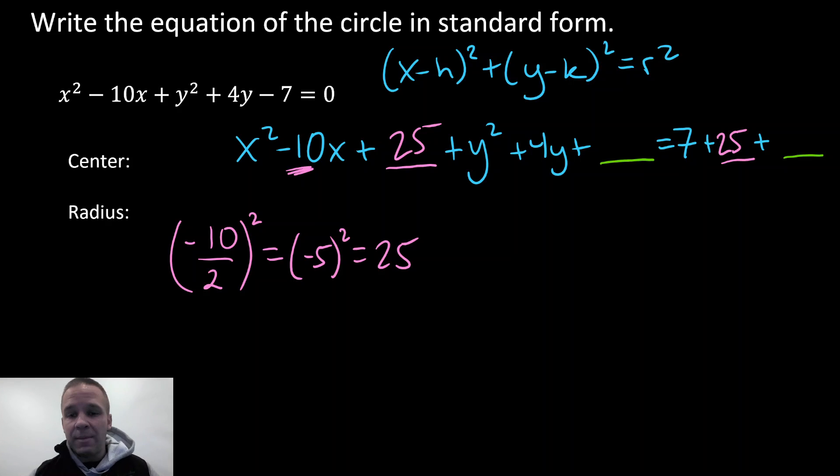Now how am I gonna get the other one? Same idea. I'm gonna take that B value, that four, I'm gonna divide it by two, square it, so that's gonna be two squared, which is four. So I'm gonna add four to both sides. Gotta balance that equation.